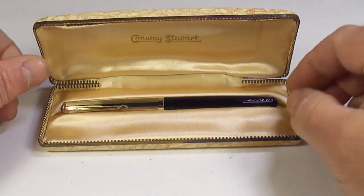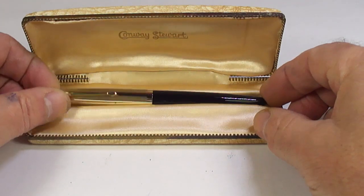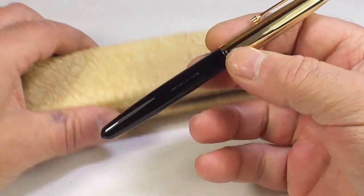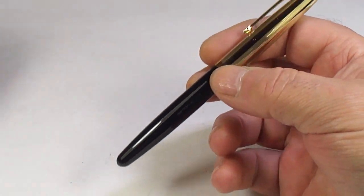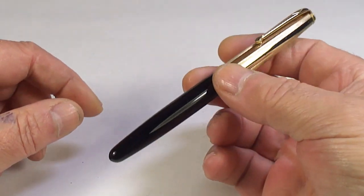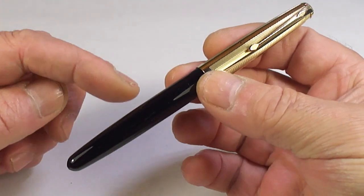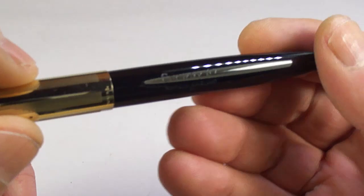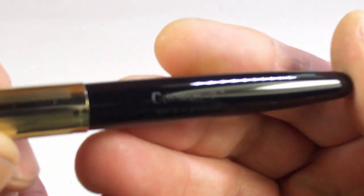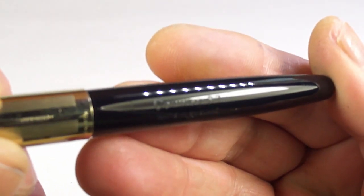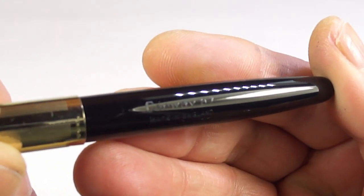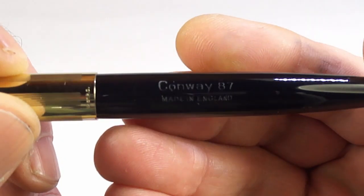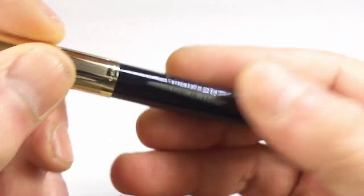It's a Conway Stuart. This pen, when she said to me, do you have any pens for sale? I said yes, some of them need to be restored. This was one of them. Let me show you the barrel imprint. You can see there, we've got a Conway 87, made in England. A lovely clear imprint.